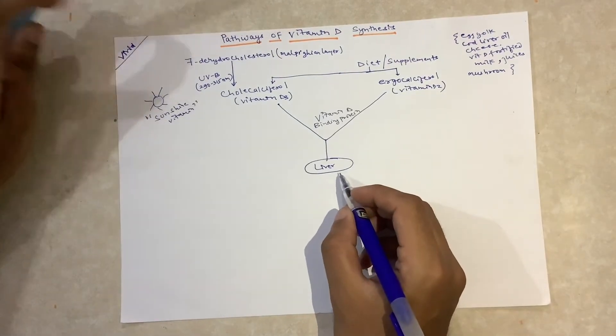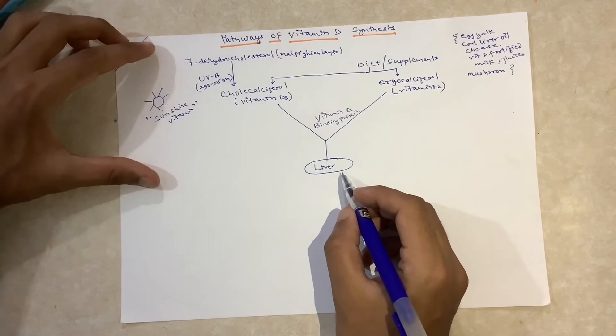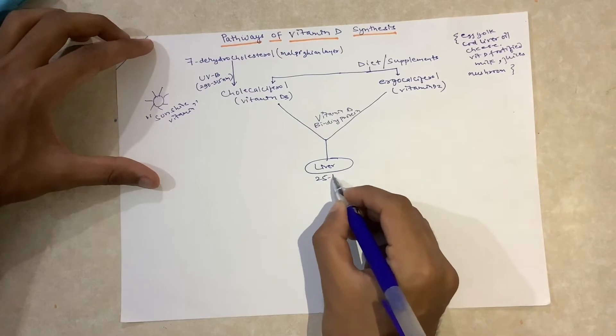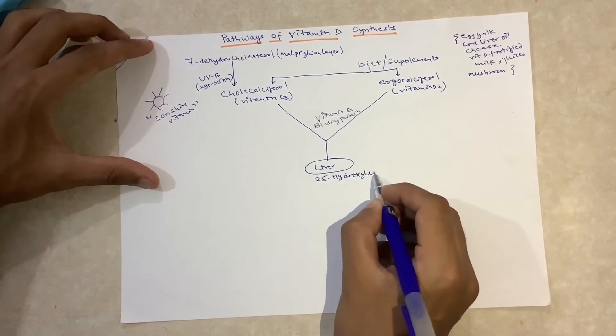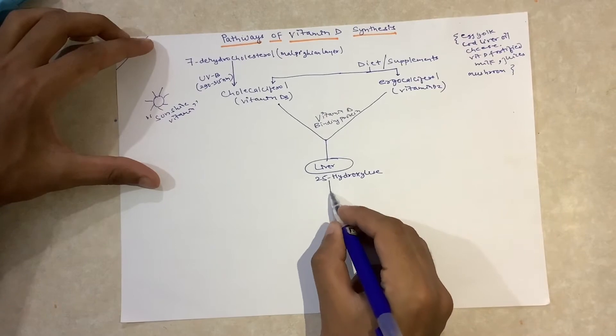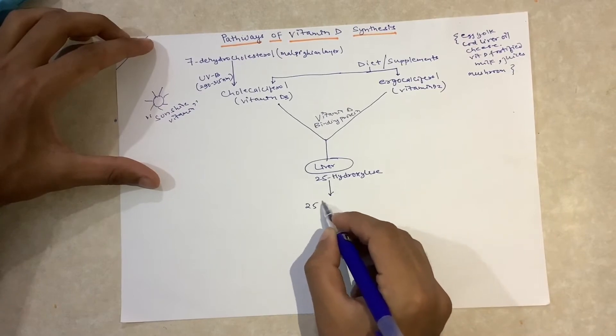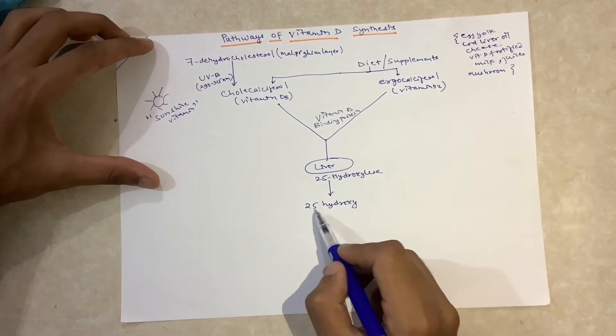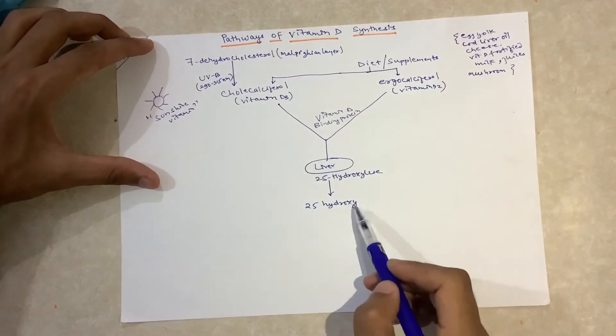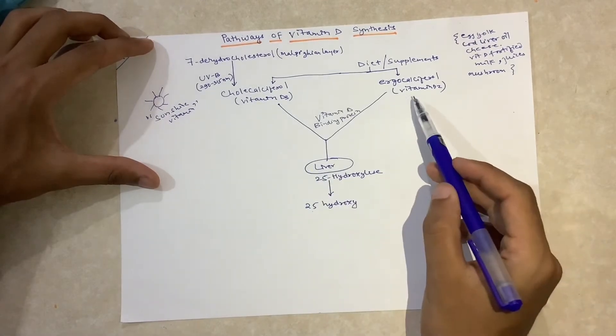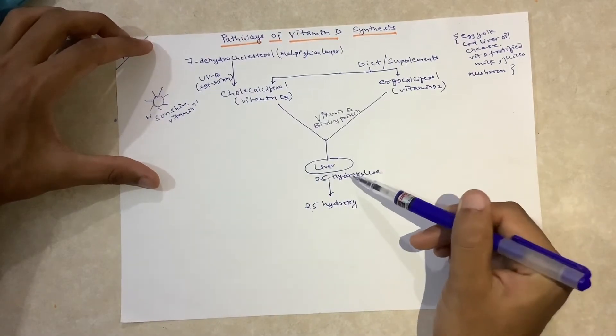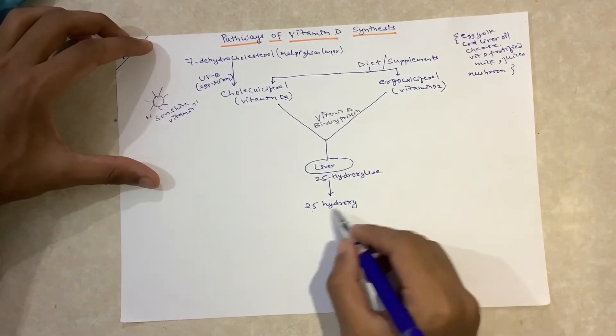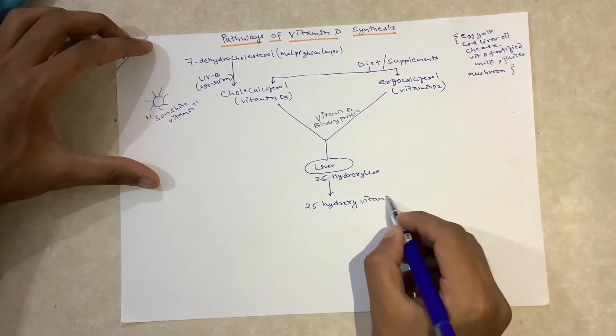In the liver it undergoes hydroxylation in the presence of enzyme 25-hydroxylase. Vitamin D3 gets converted into 25-hydroxy vitamin D3, and vitamin D2 gets converted into 25-hydroxy vitamin D2. The common name for both is 25-hydroxy vitamin D.